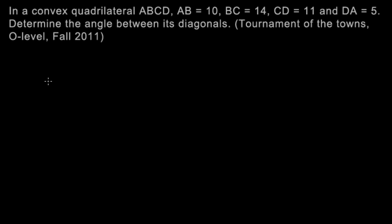Start by drawing a diagram. So we have quadrilateral ABCD. Let's call this A, ABCD, and AB is 10, BC is 14, CD is 11, and AD is 5. I'm just going to draw the diagonals too.